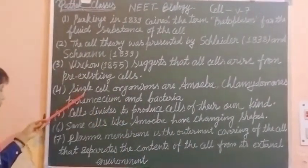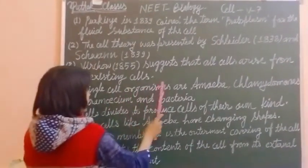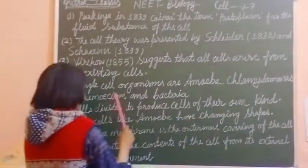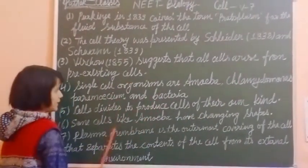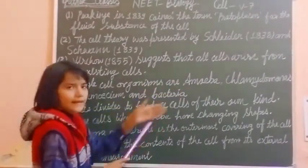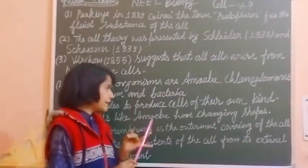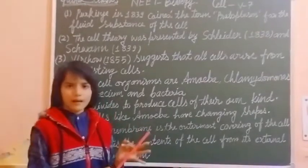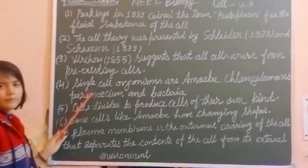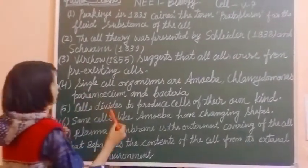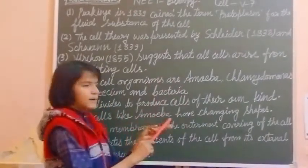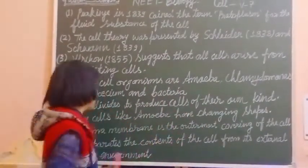Next, fourth point. Single cell organisms are Ambeva, Clamidomonas, Paragasium and Bacteria.